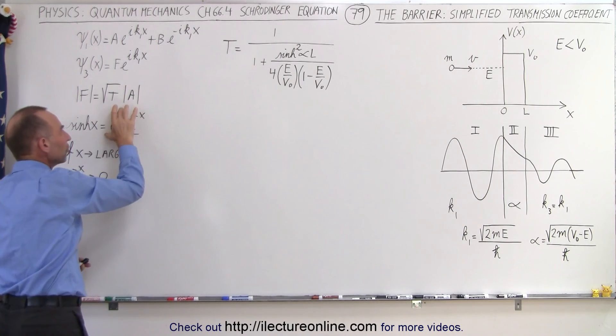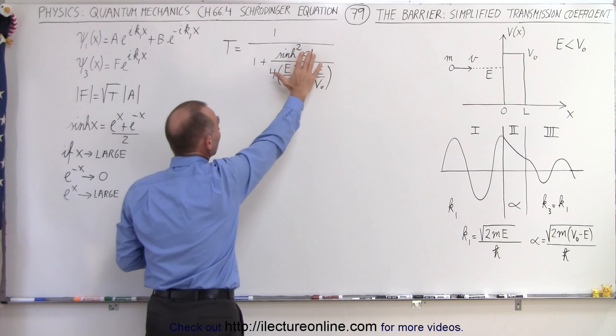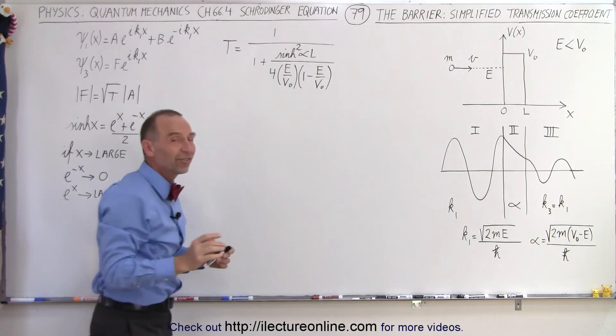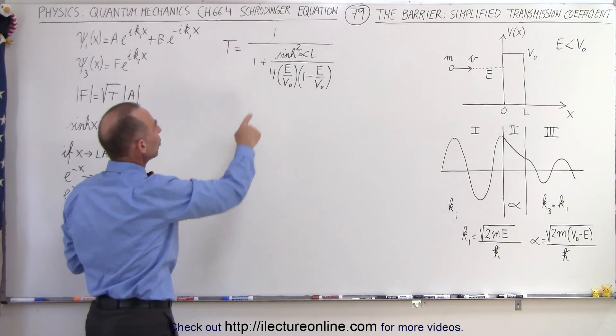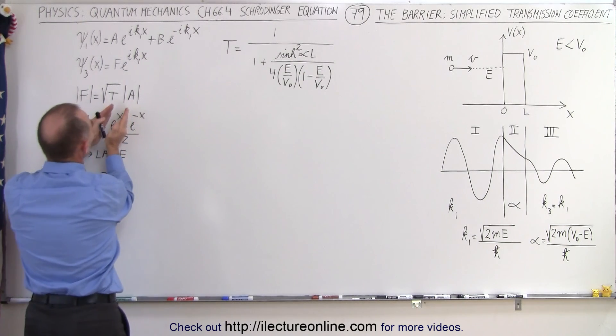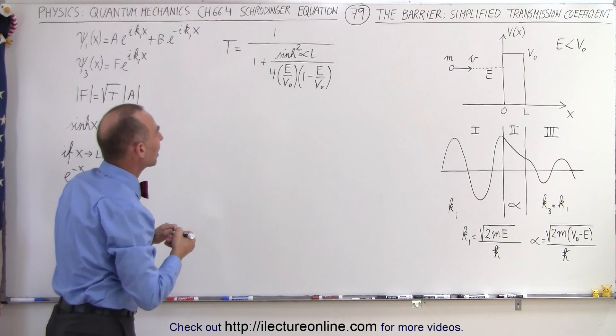The hyperbolic sine of alpha L, the e to the x portion of that becomes very large in such a way that 1 plus a large number, well, we can drop off the 1, and we have virtually the same equation. So let's go ahead and do that. We'll make those two changes. We'll make the 1 disappear, and we'll just put this portion of the equation in there instead of the whole hyperbolic sine.